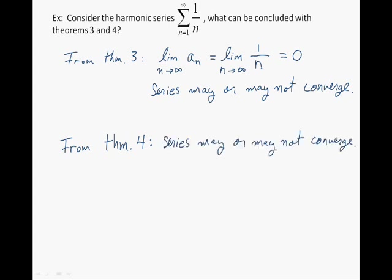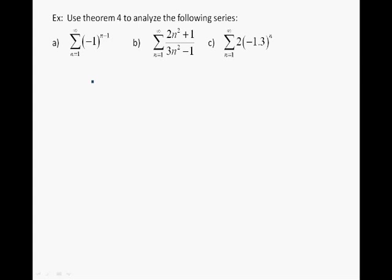We're now going to analyze a few more series with the test for divergence. In using the test, we always find the limit of the n-th term as n approaches infinity. For part a, we find the limit as n approaches infinity of (-1)^(n-1). This limit does not exist because (-1)^(n-1) equals 1 or -1 depending on n: when n is even, the exponent is odd giving -1, and when n is odd, the exponent is even giving 1. Therefore the limit does not exist, and by the test for divergence, the series diverges.